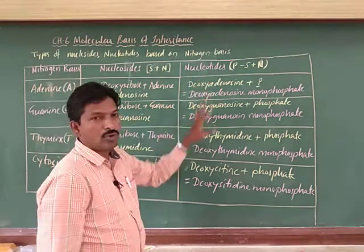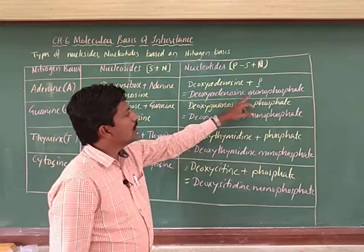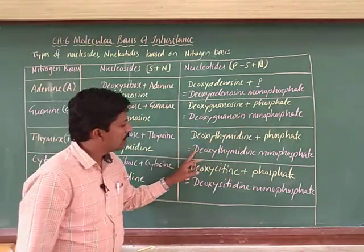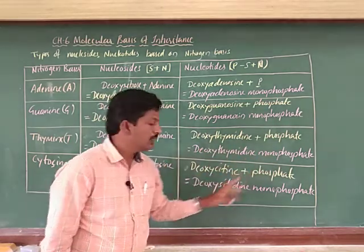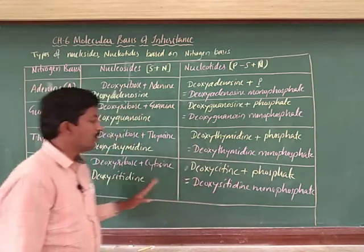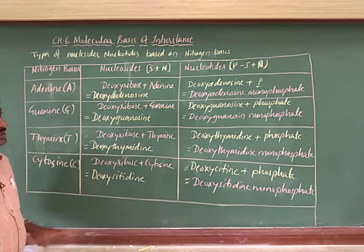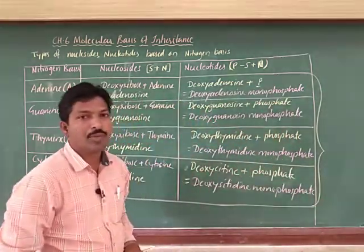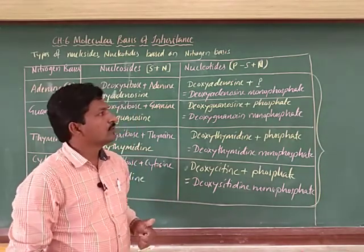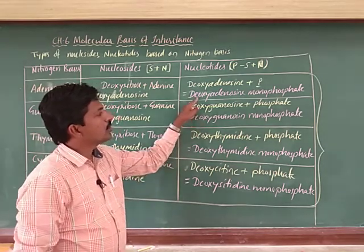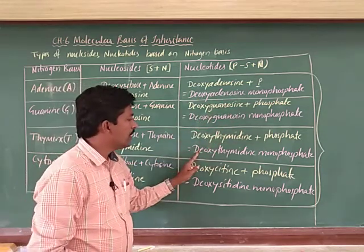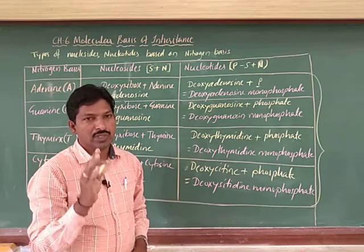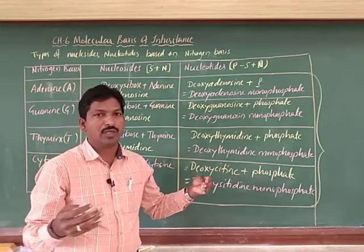The four types of nucleotides formed are: deoxyadenosine monophosphate, deoxyguanosine monophosphate, deoxythymidine monophosphate, and deoxycytidine monophosphate. These four types combine in different proportions to form a polynucleotide chain.